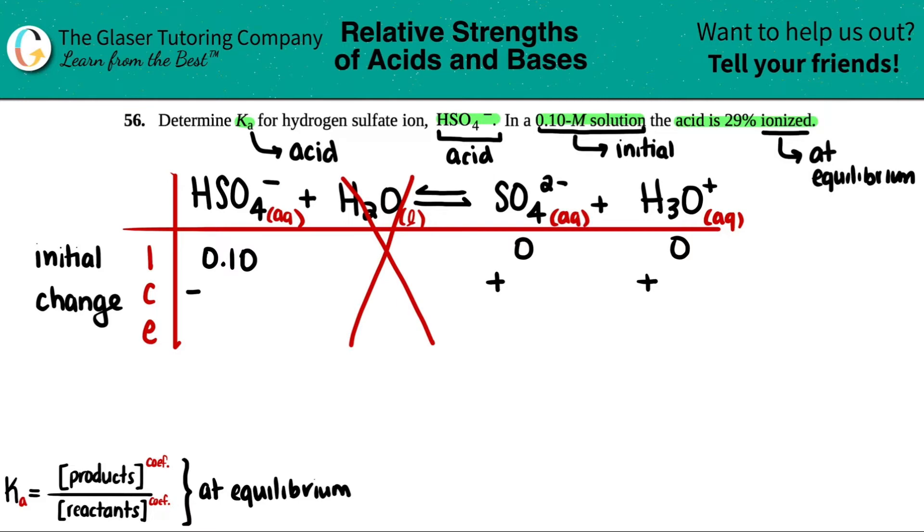I'm going to say minus X, plus X, and plus X. It's always in regards to your coefficients, but with acids and bases it's always a one-to-one-to-one ratio. So that's why it's minus X, plus X, and plus X.